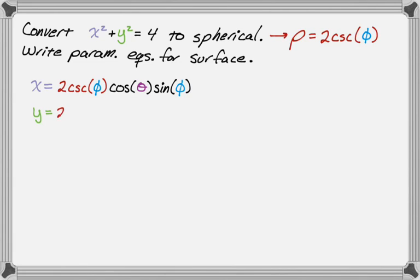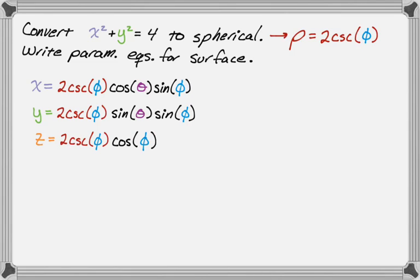Y is equal to rho, which is two cosecant of phi, and then sine theta sine phi. So the same interesting thing happens here. But again, we're just going to leave it for now. And then z is equal to rho, and then cosine of phi. So it's going to be two cosecant phi, and then cosine of phi.